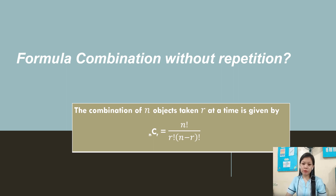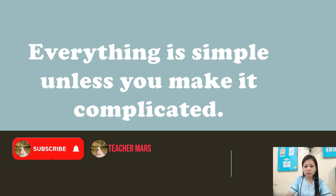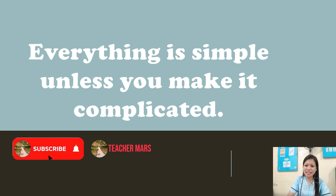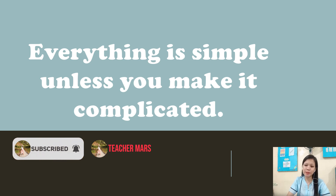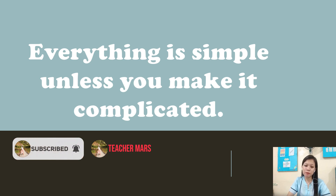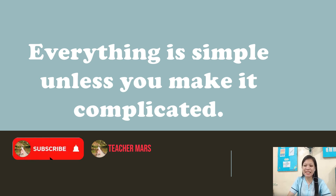Once again, the formula of combination without repetition: C(n, r) = n factorial over r factorial times n minus r factorial. That's all for today. This is Teacher Morris, and she believes that everything is simple unless you make it complicated. Thank you everyone — see you in the next video. Don't forget to subscribe, like, and watch. Bye!